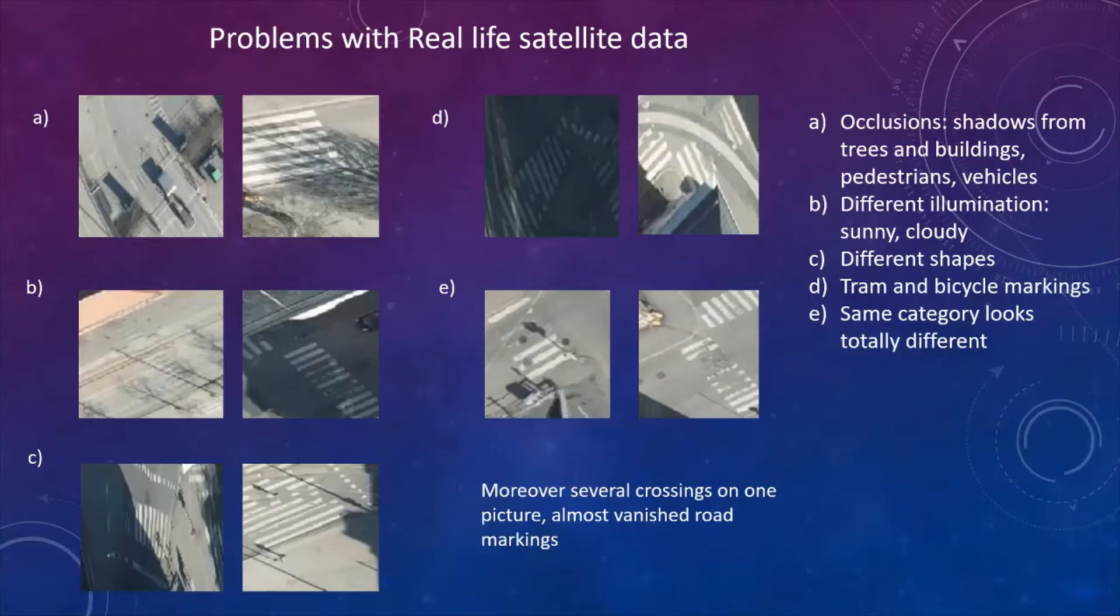And here on the slide you can see the problems that occurred with the real life satellite data. First is the occlusions. There are shadows from trees, buildings, pedestrians and vehicles. The second photo you can see that images are from different illumination. For example, it could be sunny or cloudy, or it could be that it was evening or daytime.